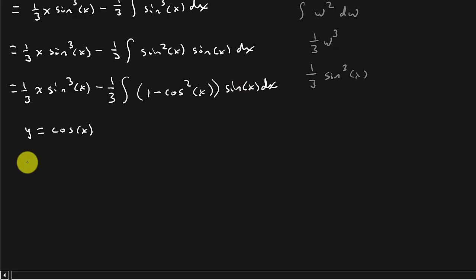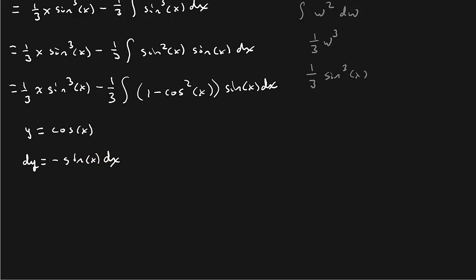And so I get dy is equal to negative sine x dx. And you can see there's my sine x dx. See that? Sine x dx. So I'm going to replace that with dy. And then in the place of cosine, I'm going to put y.